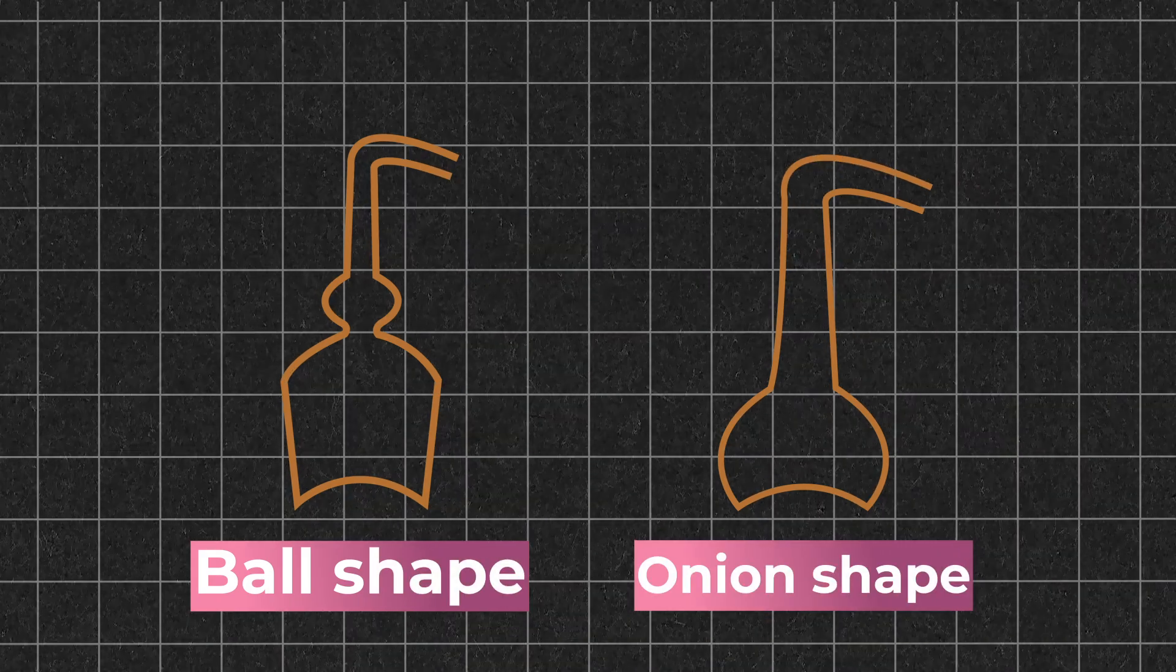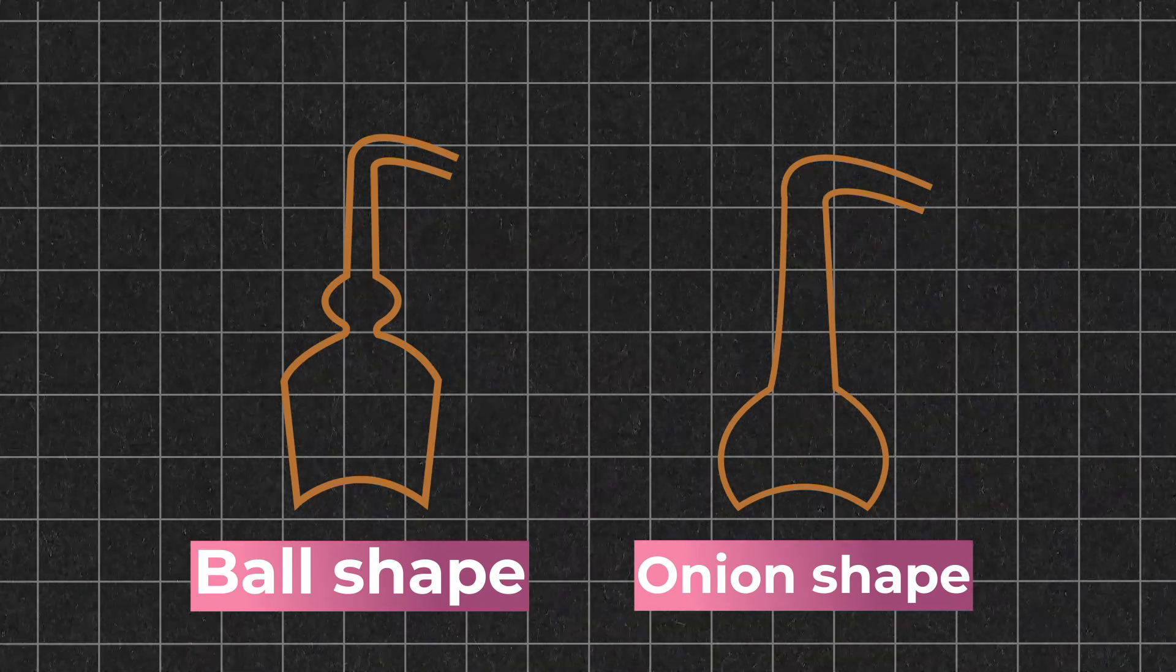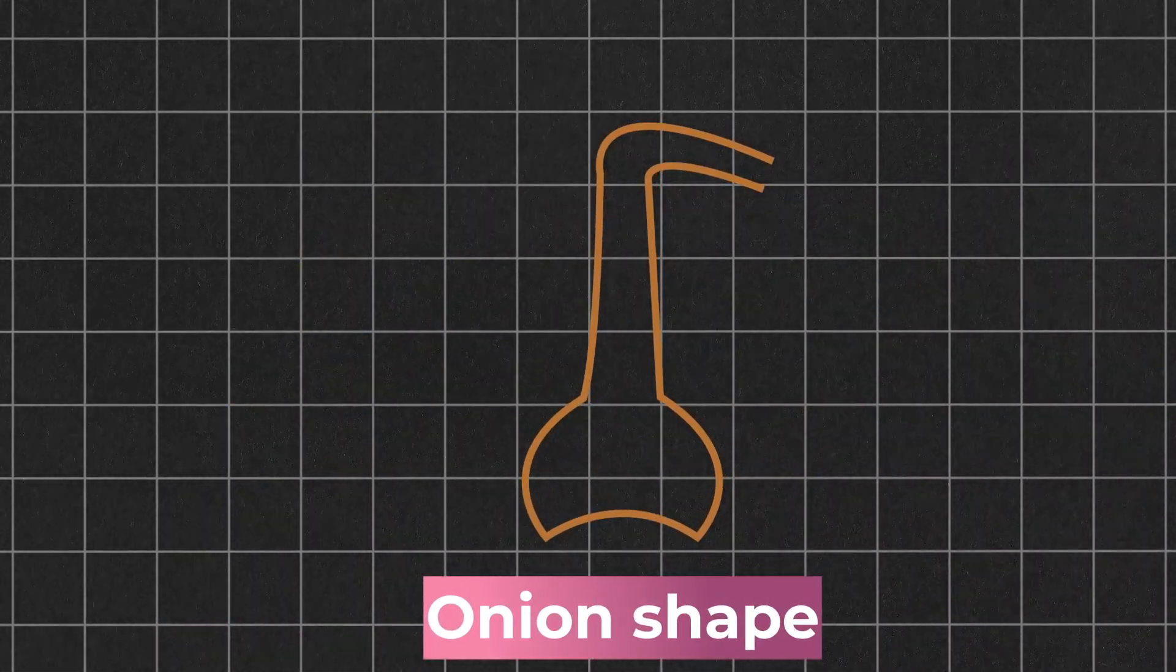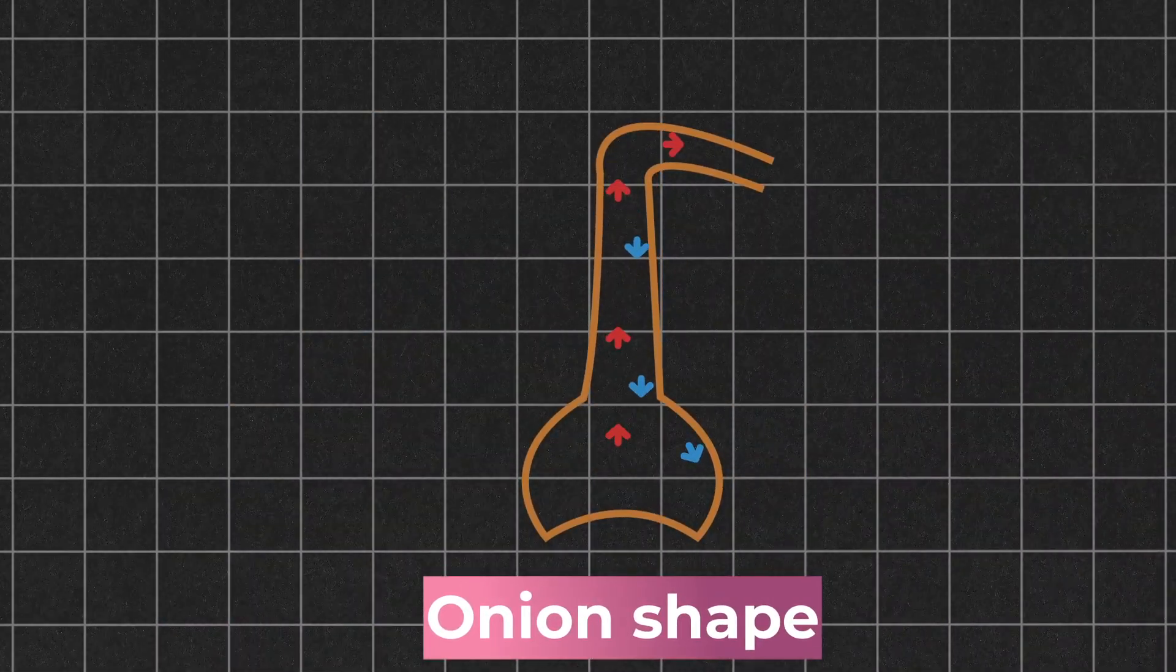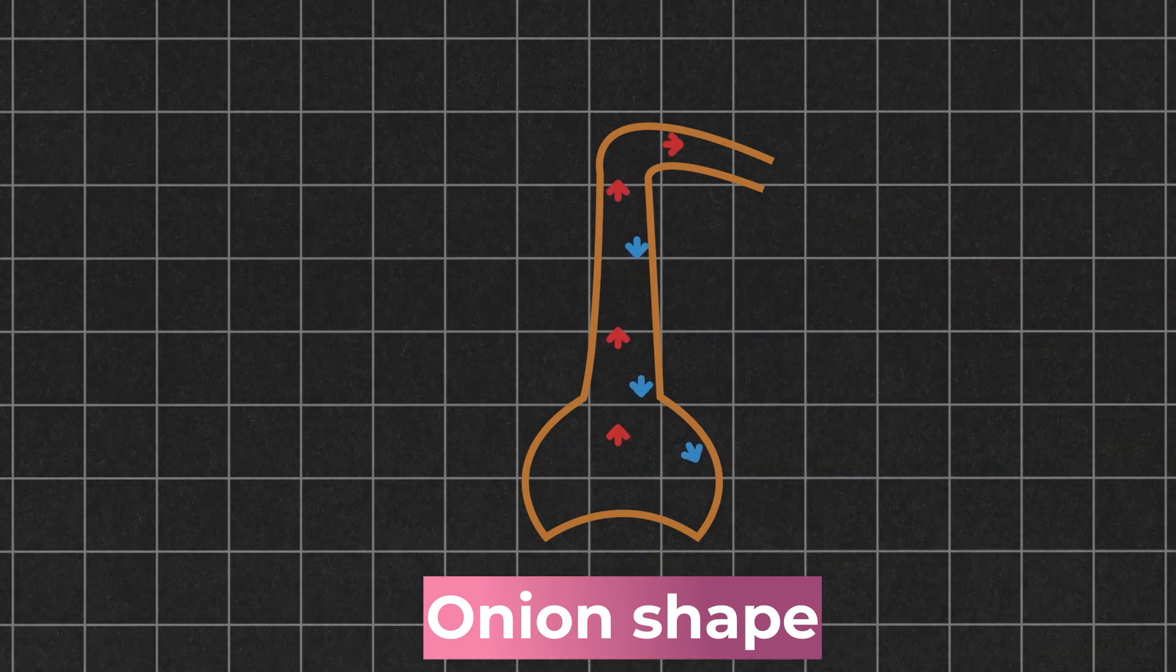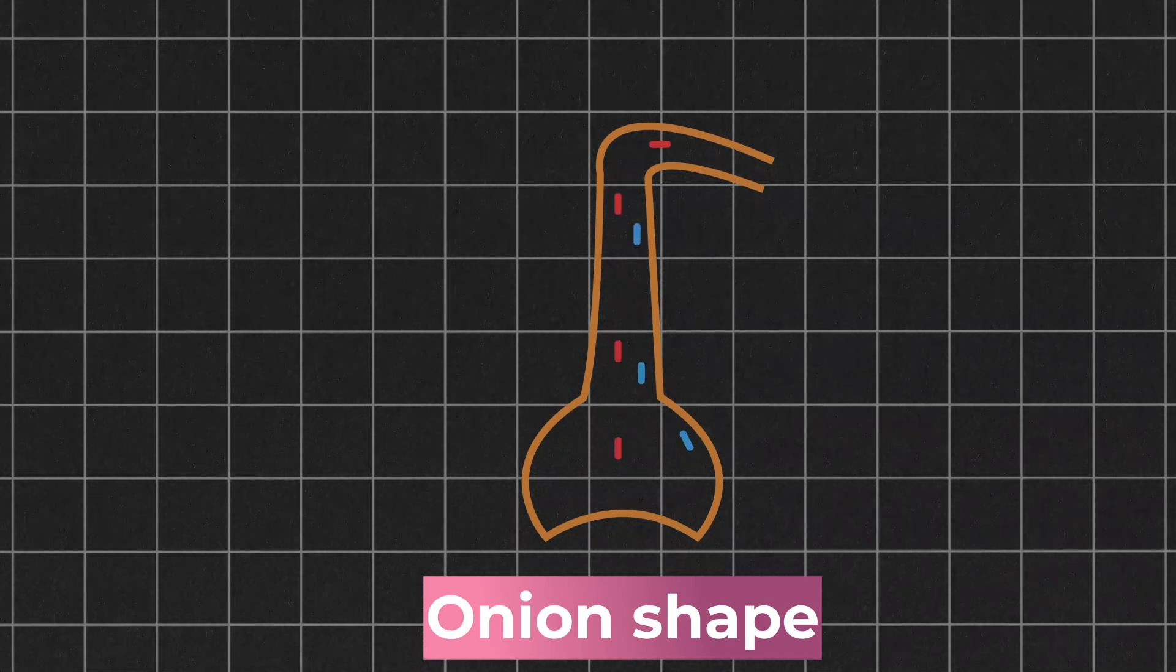If you want to learn more about the influence of copper in distilling, I've linked that video above. If the still is onion shaped, when the heavier components reach this area, they won't be able to handle the sudden change in pressure and they'll fall back down into the wash. The higher volatility components will pass through and enter the head of the still.